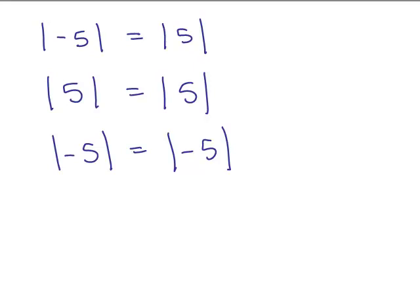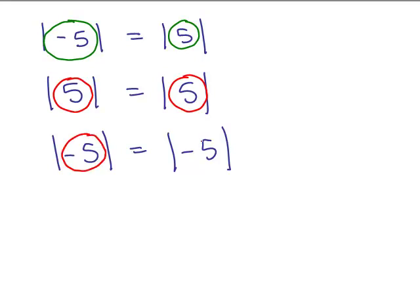What you notice is that either the two things inside the absolute values are opposites of each other, or they're exactly the same. The absolute value of 5 equals the absolute value of 5, and the absolute value of negative 5 equals the absolute value of negative 5 — those are the cases.